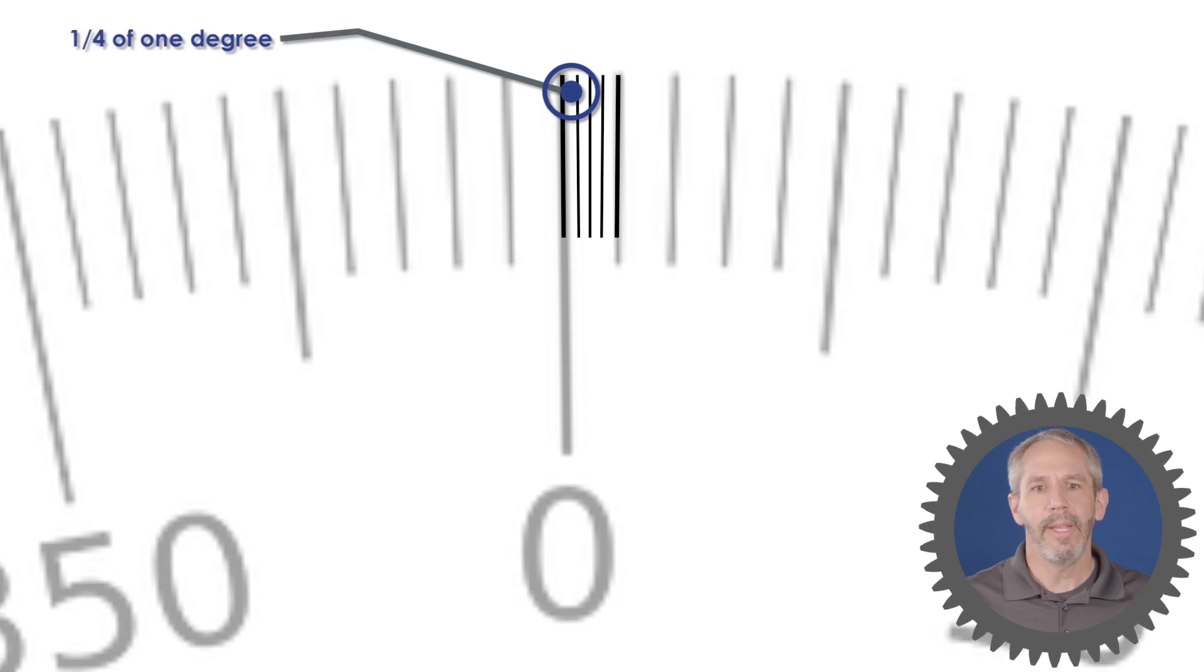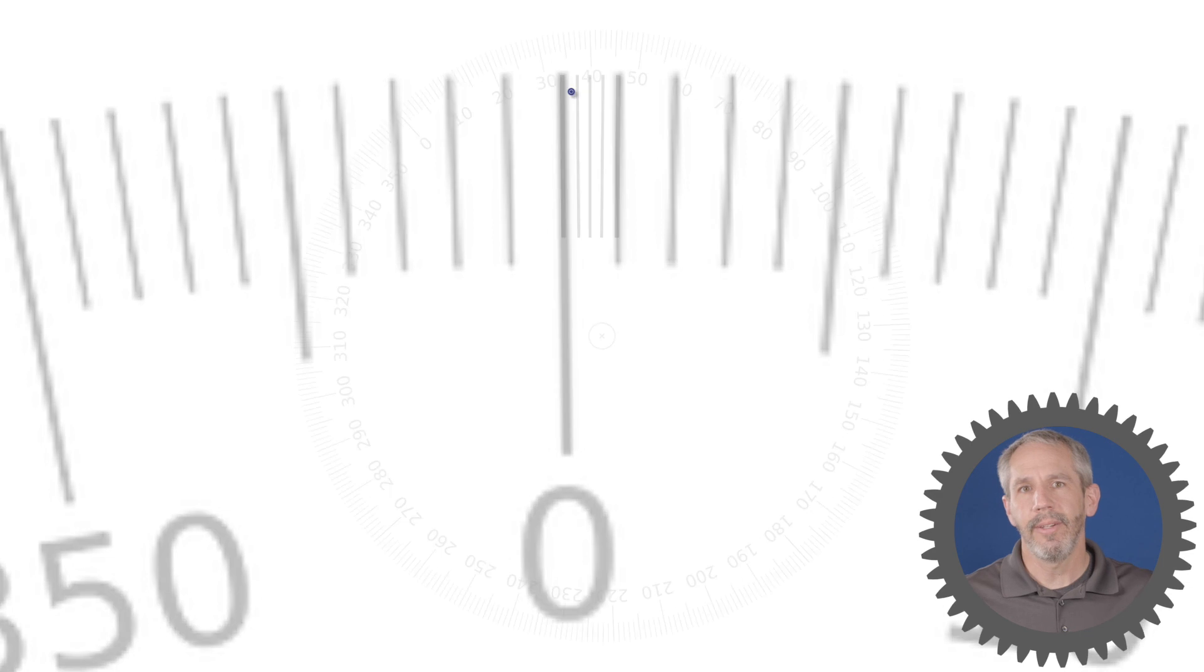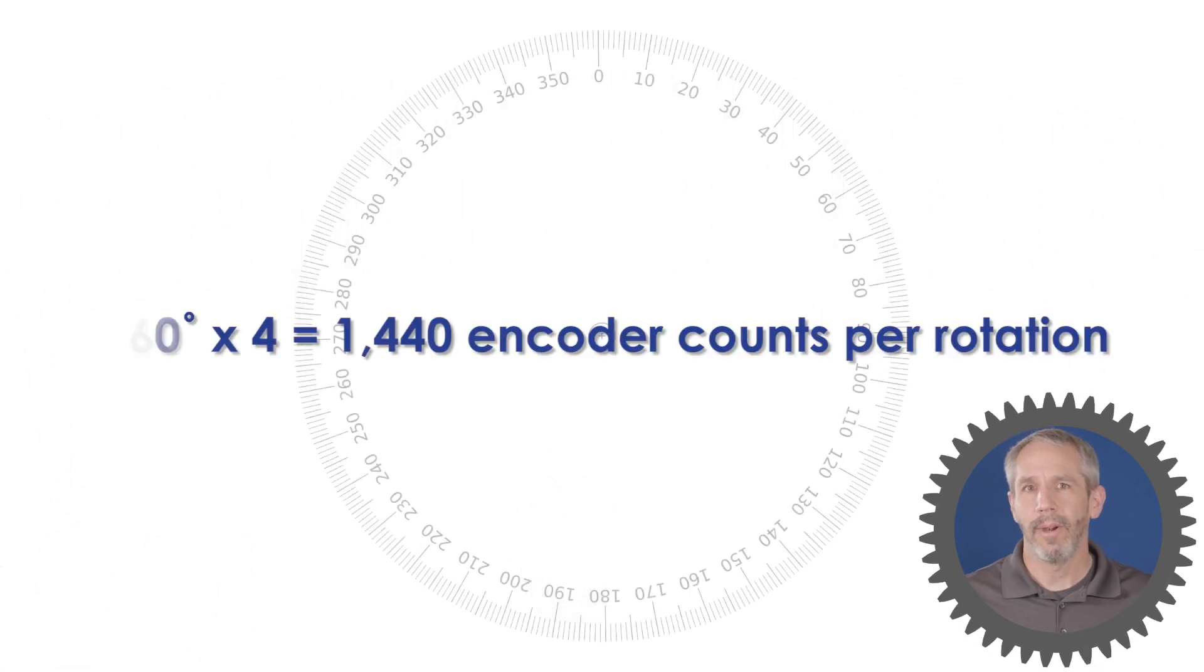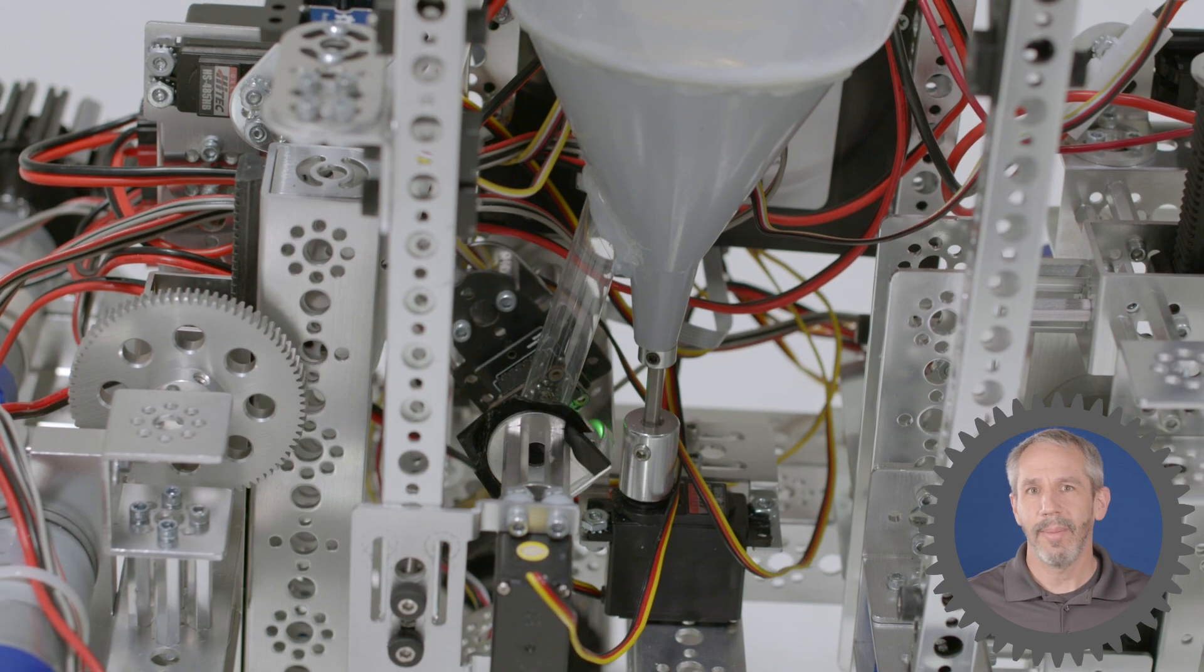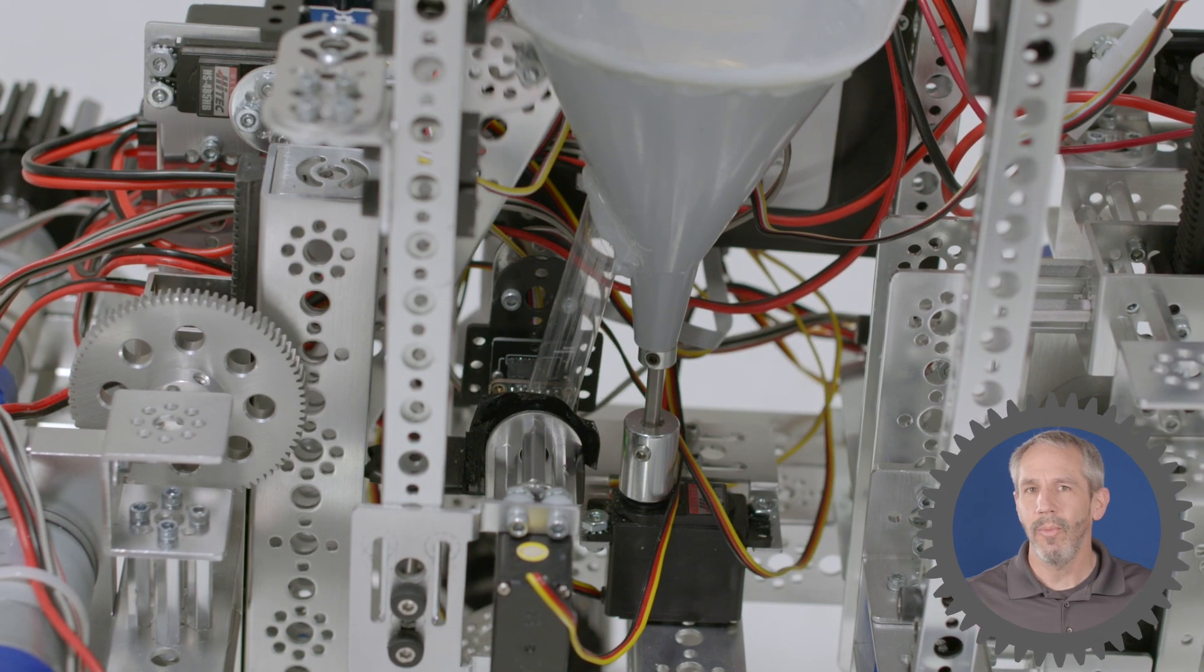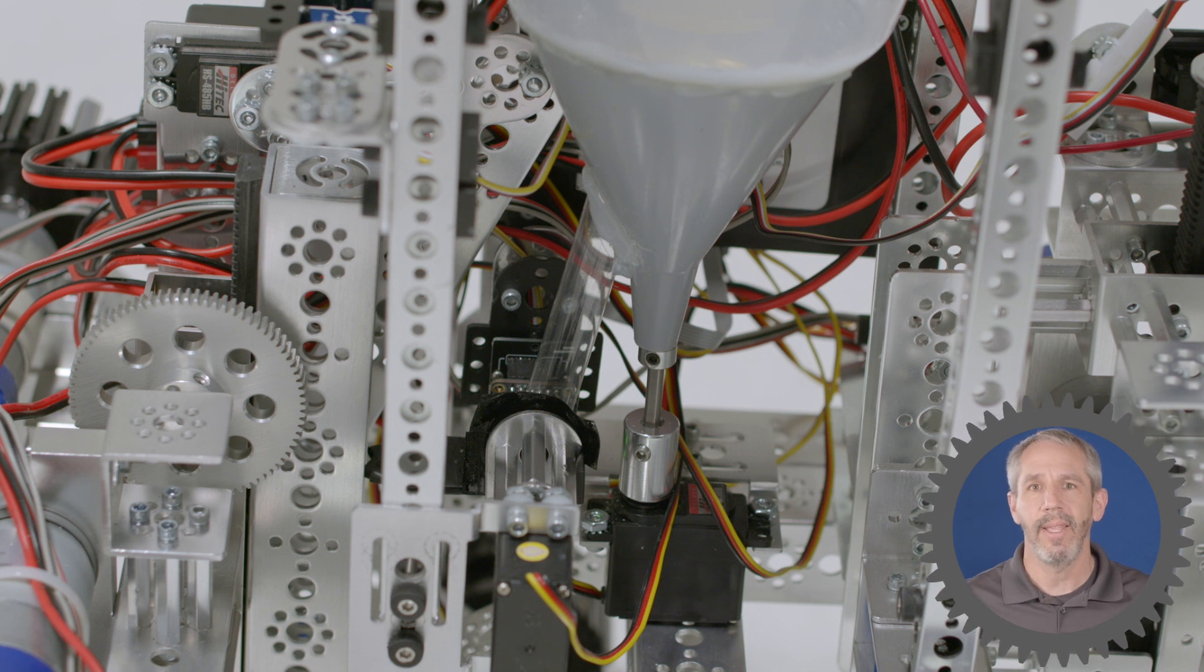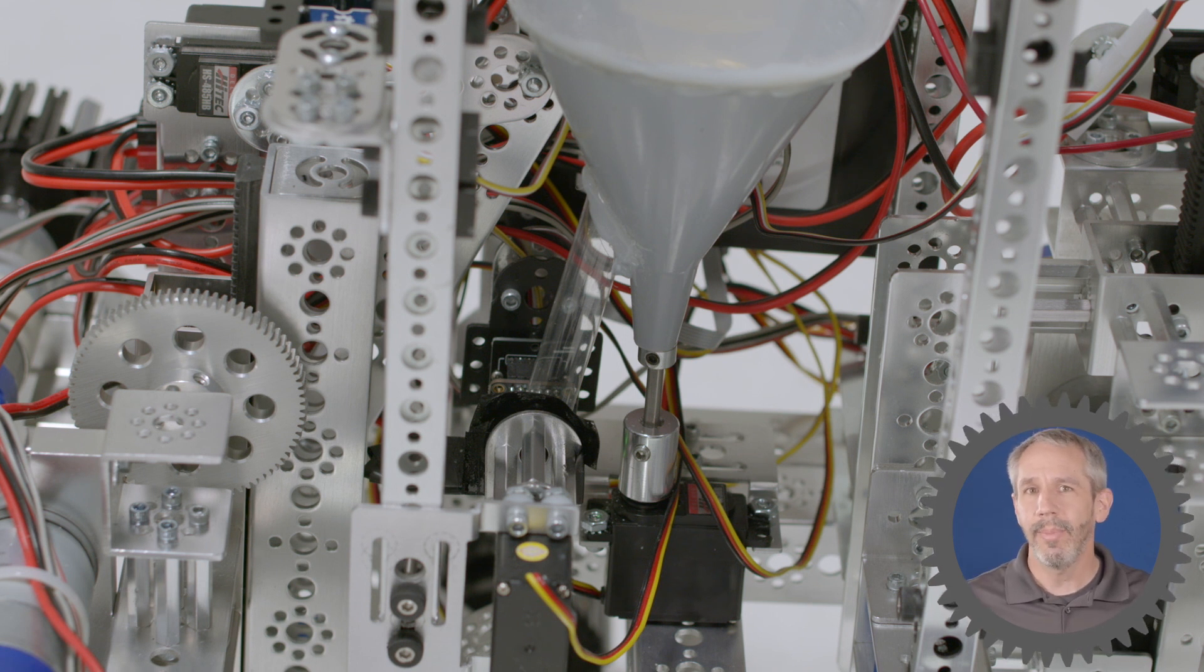Now recall that there are 360 degrees in one rotation. So there are 360 degrees times four, or 1440 encoder counts. That means I can program my torque NATO motor to rotate to any one of these 1440 encoder counts. That's pretty precise movement.